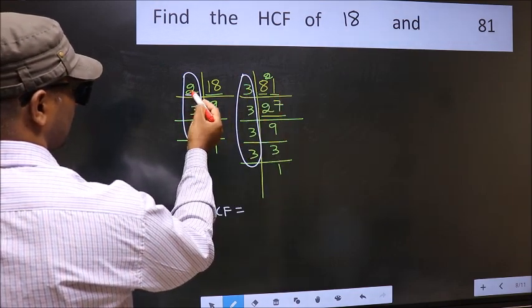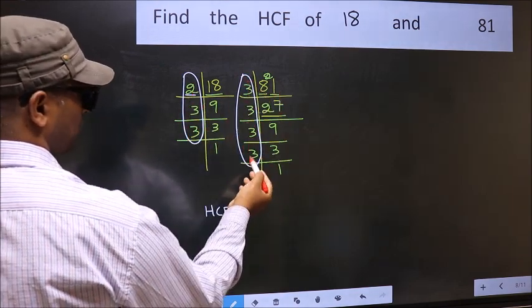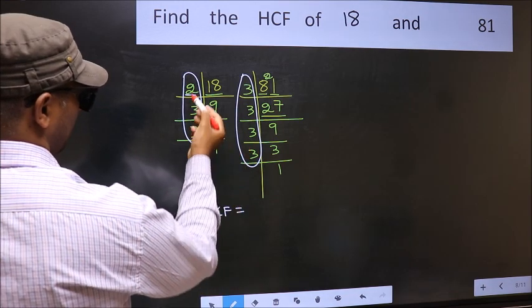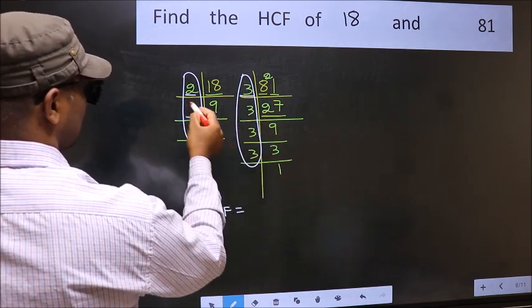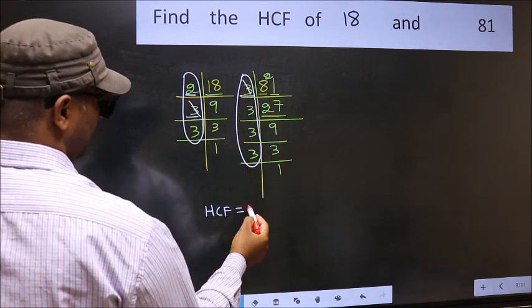Starting with the number 2. Do we have 2 here? No. Next number 3. Do we have 3 here? Yes. So cut 3 right here.